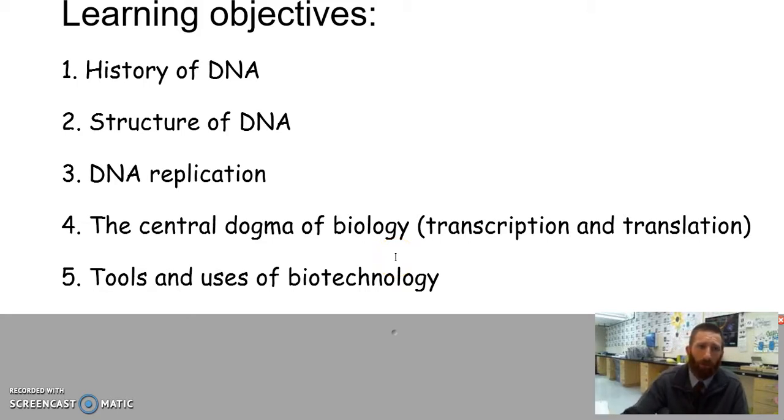Obviously we start with learning objectives. So we have four learning objectives. Number one, we're going to look at the history of DNA and some experiments and some people associated with the discovery of DNA. Two, we're going to look at the structure of DNA. So you guys all probably remember from seventh grade, it's a twisted ladder, a sugar phosphate backbone, bases in between A's and C's and T's and G's. We're going to remind you of everything that you learned in seventh grade.